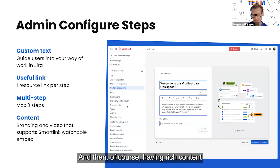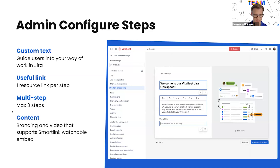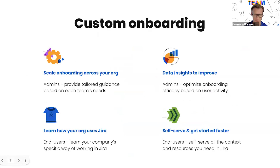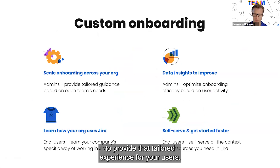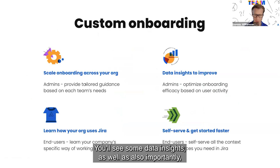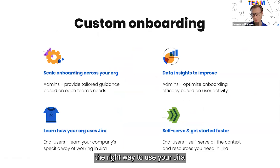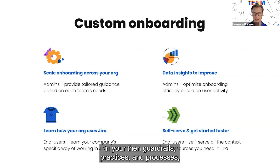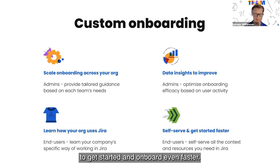And of course, having rich content from video embeds like Loom as well as imagery. Custom onboarding is all about helping you scale your way of work to provide that tailored experience for your users. You get data insights, and importantly, that key moment — helping users understand the right way to use your Jira, your guide rails, practices and processes, and giving them the right context they need to get started and onboard even faster.